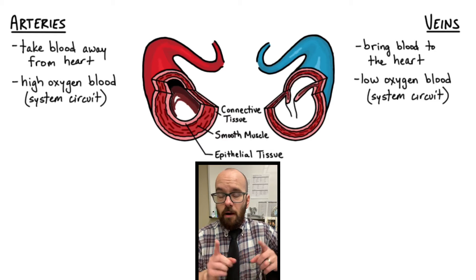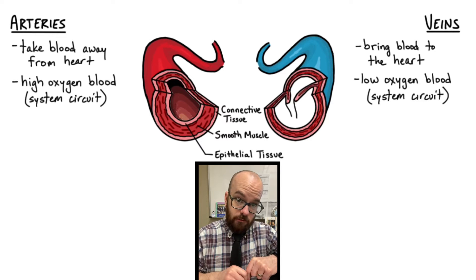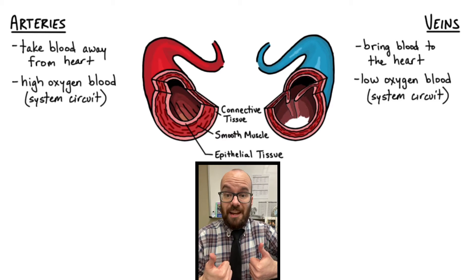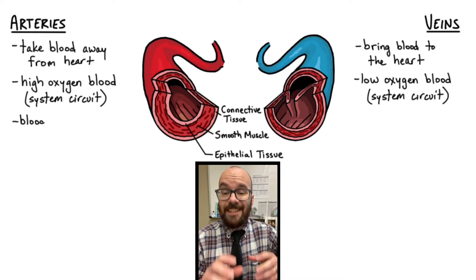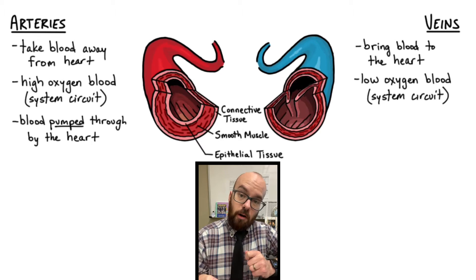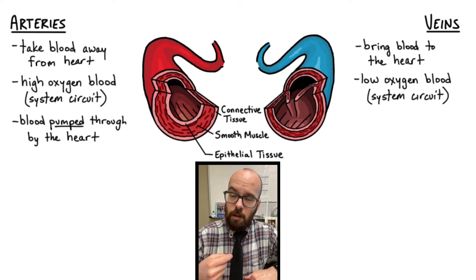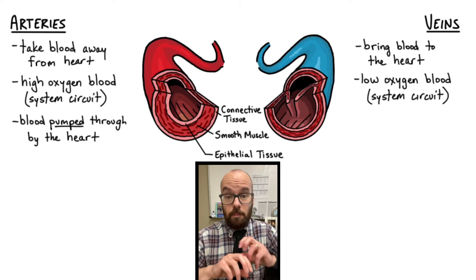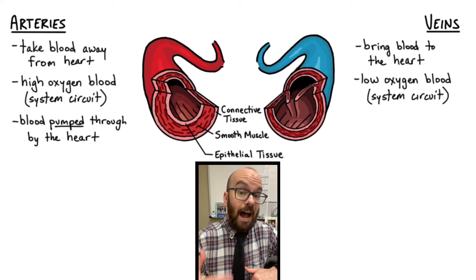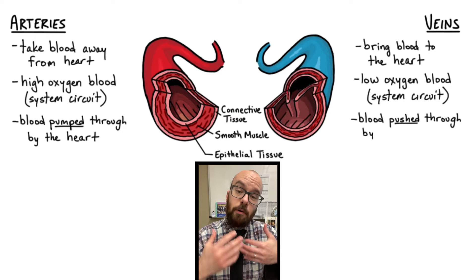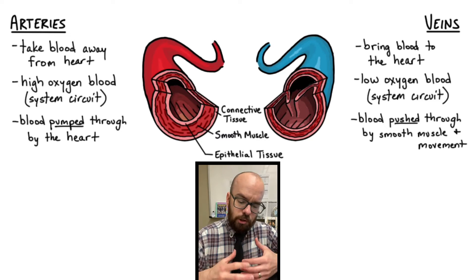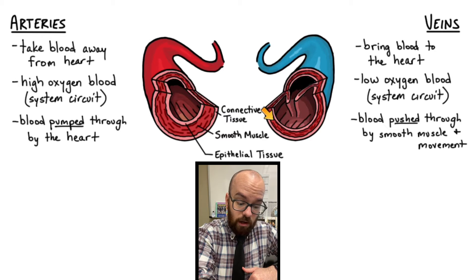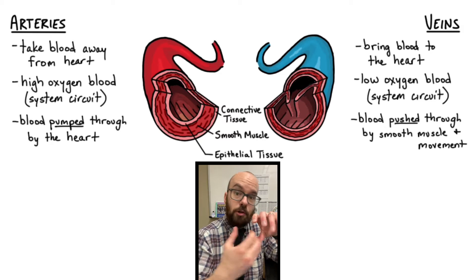All the other differences we talk about tie back to one key difference: what causes blood to flow through arteries versus veins. For the arteries, it's the heart itself pumping the blood. Most people assume the heart pumps blood through both arteries and veins, but that's not true — the heart only pumps blood through the arteries, away from itself at very high pressure. In the veins, blood is pushed through at a lower pressure by smooth muscle and by movement.